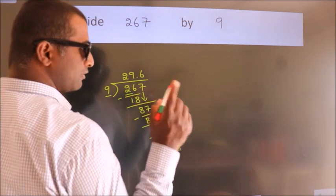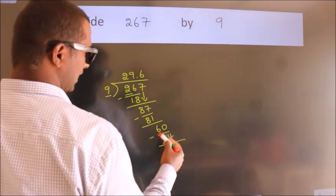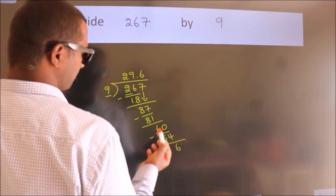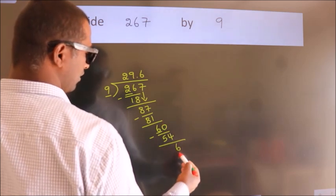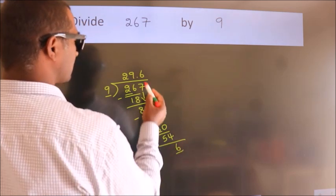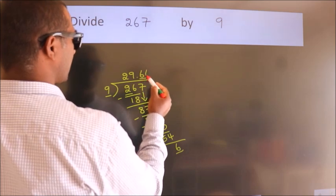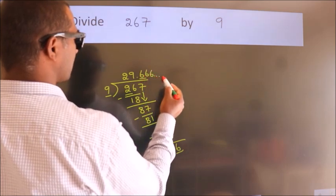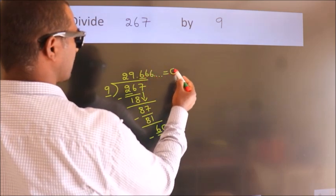Now observe: here we had 6 and we got 6 again. That means this number keeps on repeating. So this is our quotient.